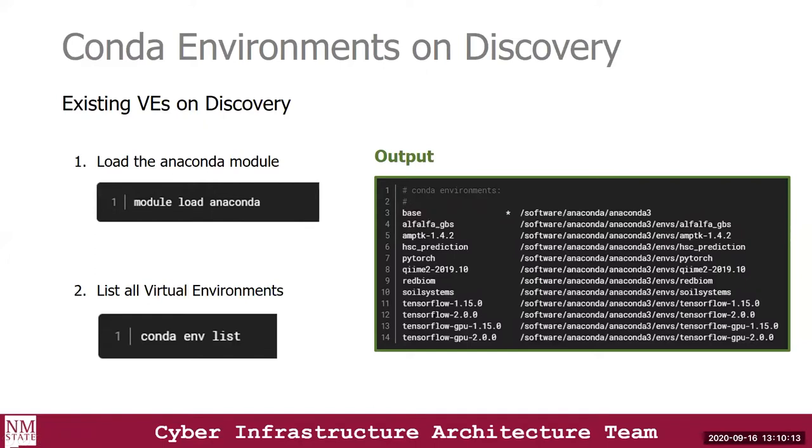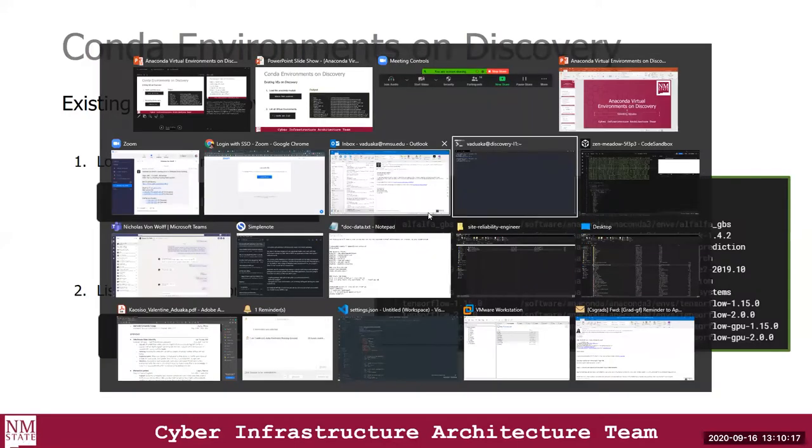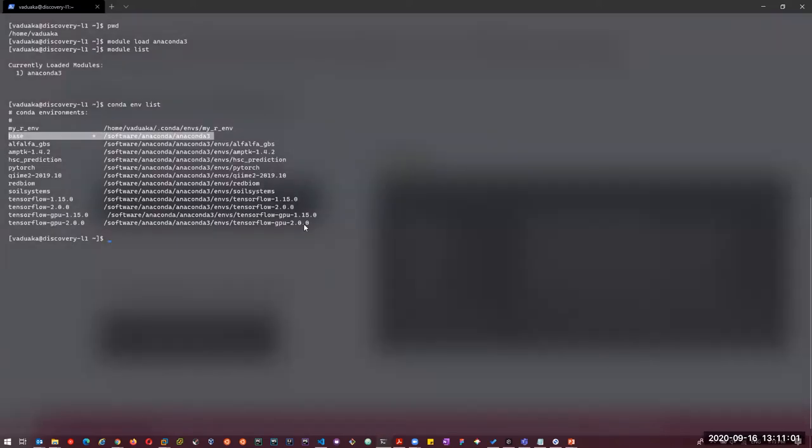Let me quickly log in and do that. This is my home directory. I'll load the Conda software with 'module load anaconda3'. The module has been loaded, and I can do 'module list' to see the active modules. Now I can do 'conda env list' to show a list of virtual environments on the cluster. By default, this is the environment I'm currently in, and these are other environments available. If your project requires TensorFlow with GPU support, you can load that environment.